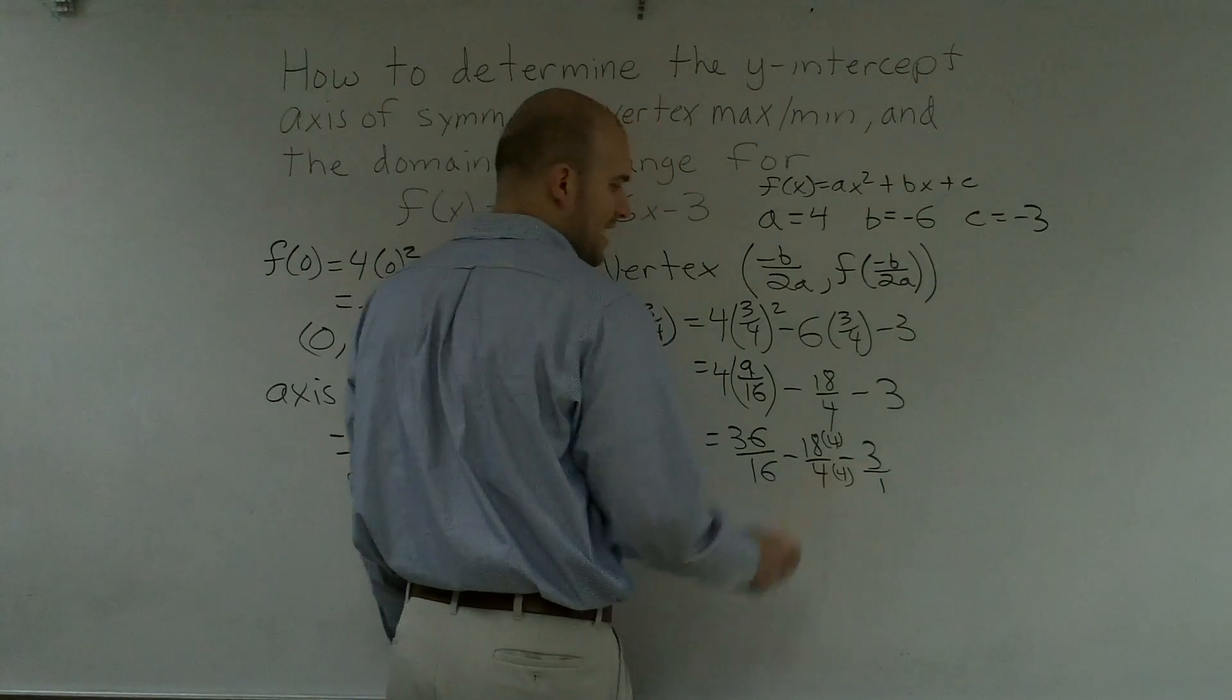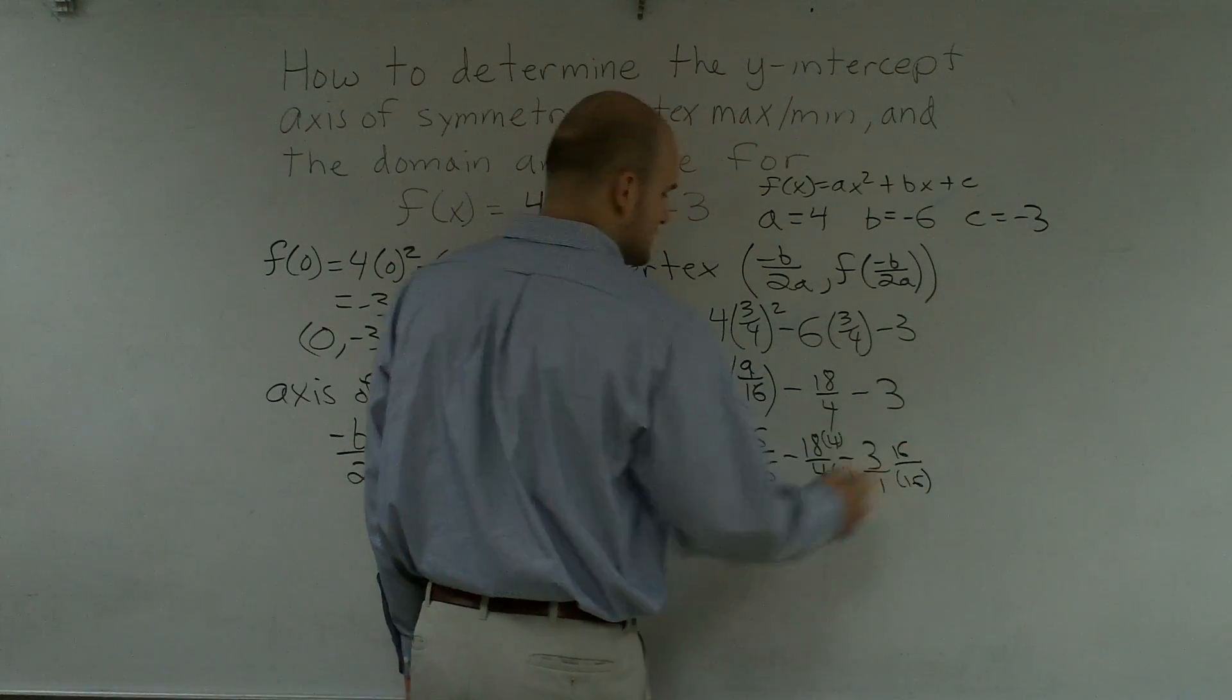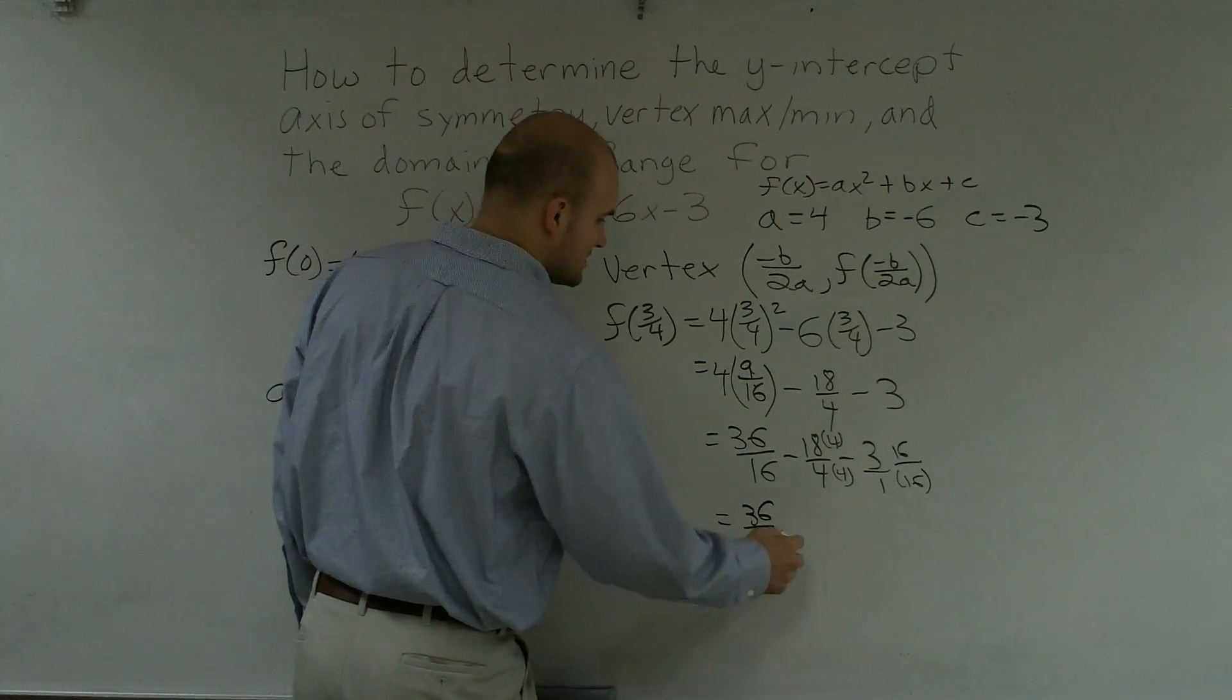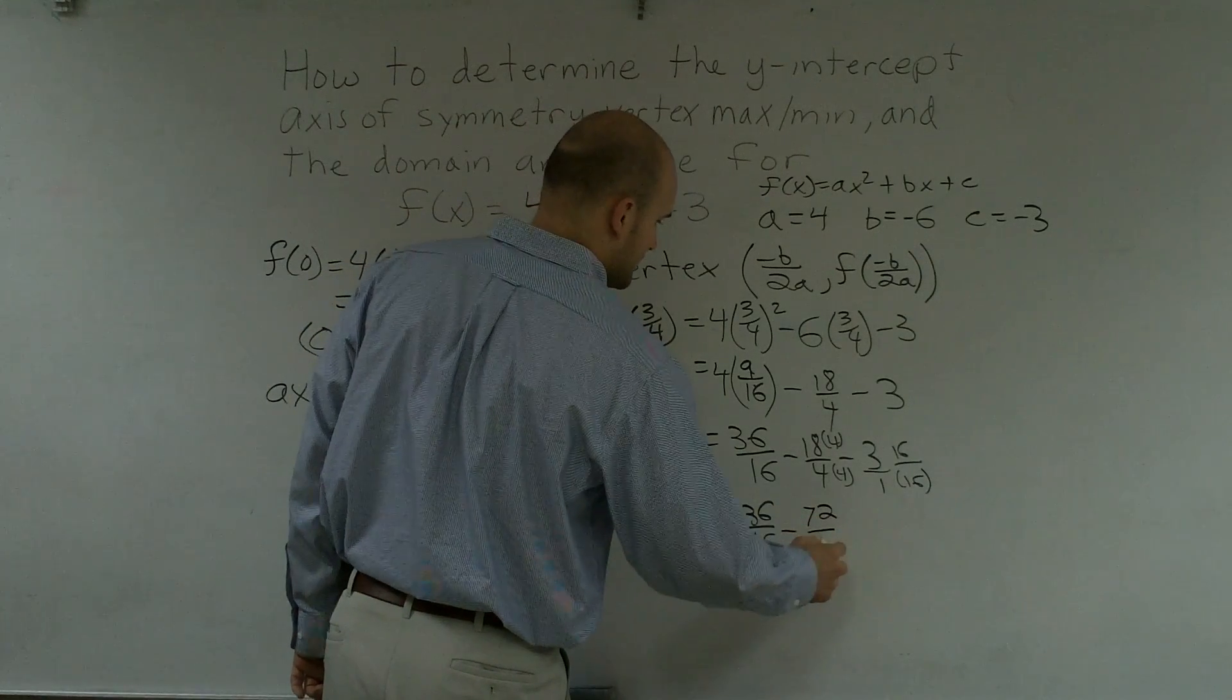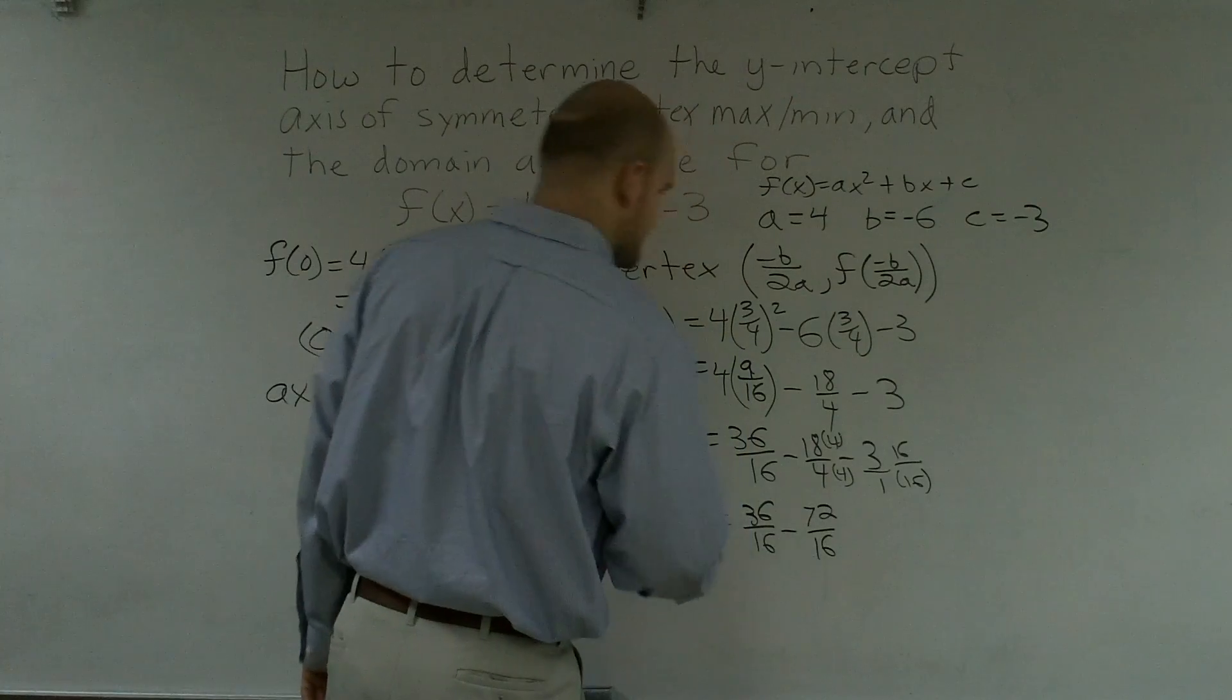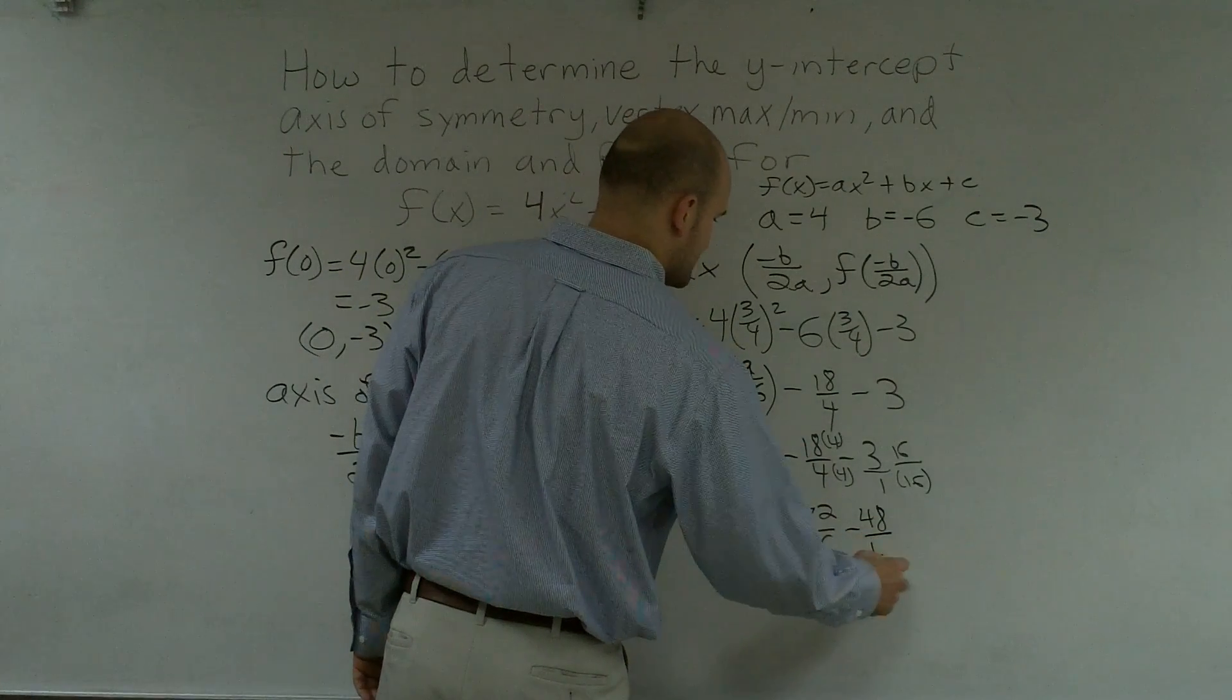And this to get 16, I'm going to multiply, that's a 1 on the bottom of there, I'm going to multiply this by 16/16. So therefore, I get 36/16, minus 36, that's going to be 72, over 16.